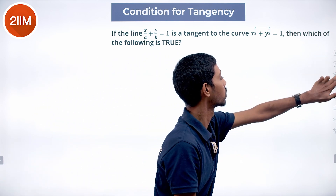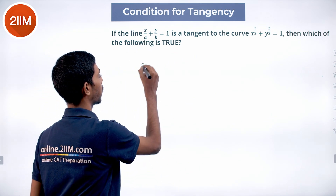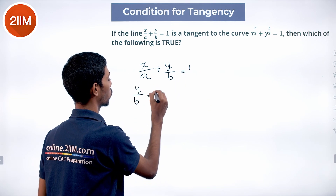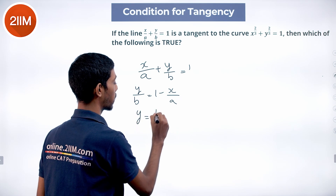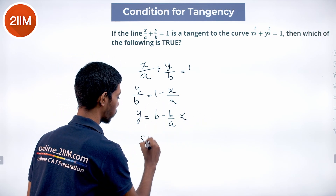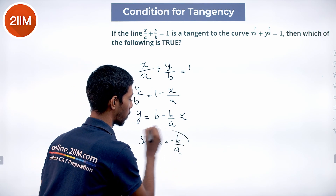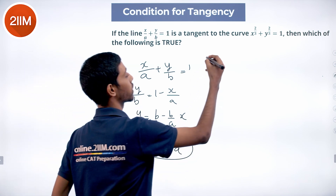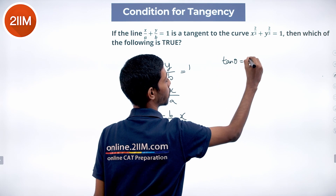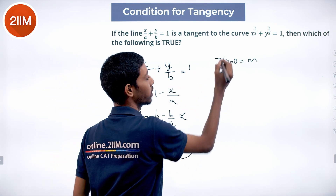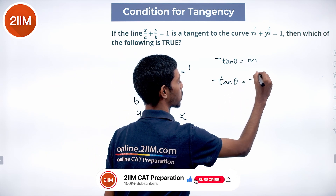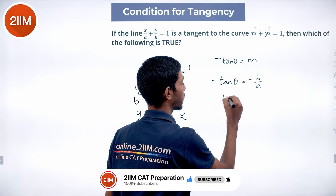Now let us find the slope of the tangent line x/a + y/b = 1. Rewriting: y/b = 1 - x/a, so y = b - (b/a)x. This is in y = mx + c form, so the slope of the tangent is -b/a. We already got the slope from the curve to be -tan θ. These two must be equal: -tan θ = -b/a, which gives tan θ = b/a.